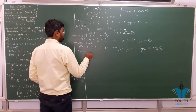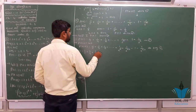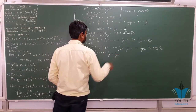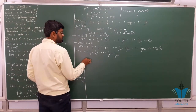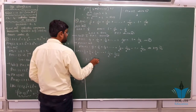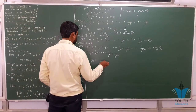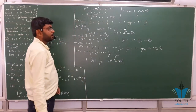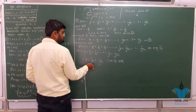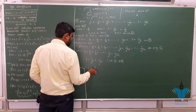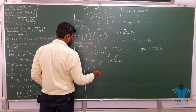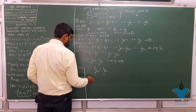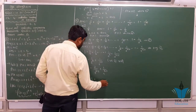Taking LHS of P(k+1): 1/2 + 1/4 + 1/8 + ... + 1/2^k + 1/2^(k+1). Using P(k), this equals 1 - 1/2^k + 1/2^(k+1) = 1 - 2/2^(k+1) + 1/2^(k+1) = 1 - 1/2^(k+1). Thus P(k+1) is proved.